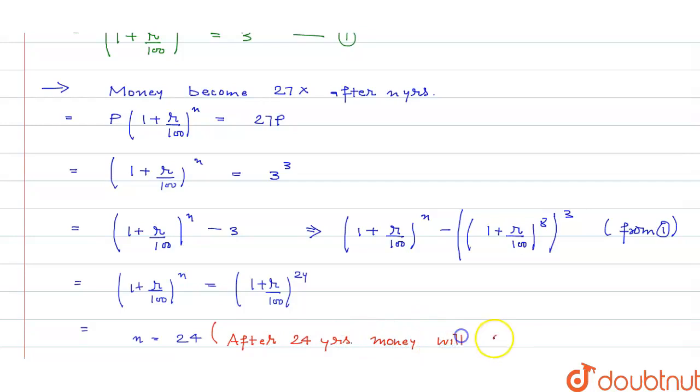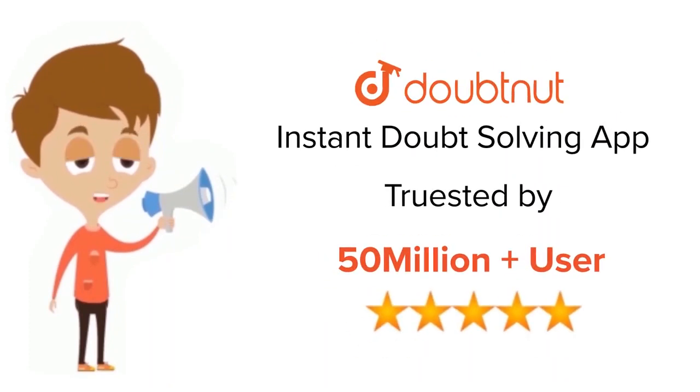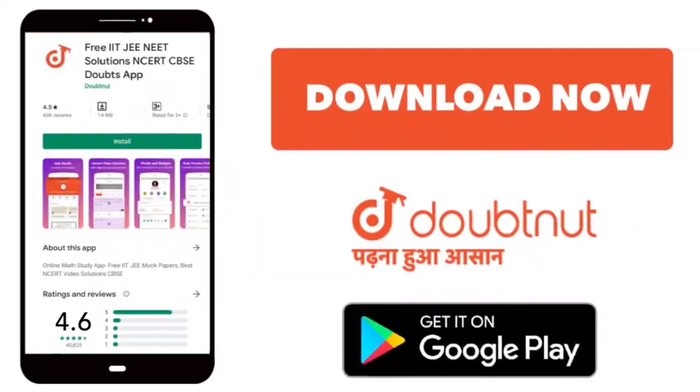...the money will be 27 times the principal, and that is our answer. Thank you. For class 6 to 12, IIT-JEE and NEET level, trusted by more than 5 crore students, download Doubtnet app today.